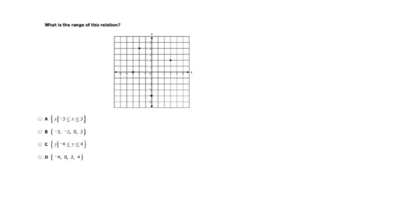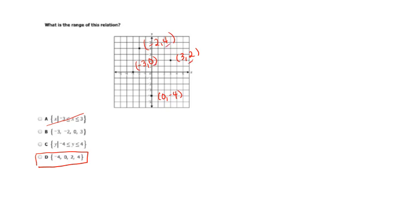This question asks: what is the range of this relation? Remember, range is my y's, so I look at my y-coordinates. Choice A is not the answer because it references x values, but range asks for y's. This is a discontinuous graph, so I list out the y-coordinates I used: negative 4, 0, 2, and 4. The answer is D — negative 4, 0, 2, and 4 — because those are the y-coordinates of the points (0, negative 4), (3, 2), (negative 3, 0), and (negative 2, 4).